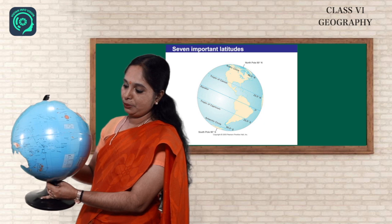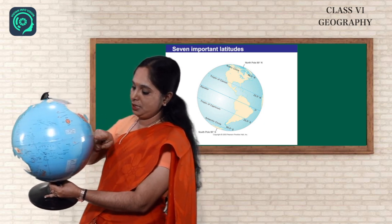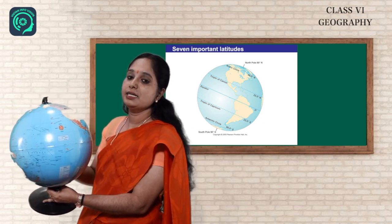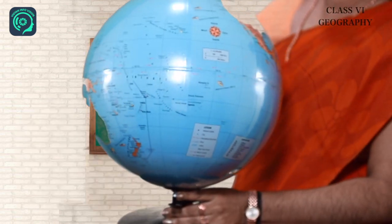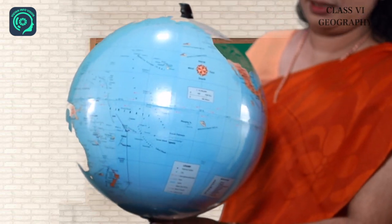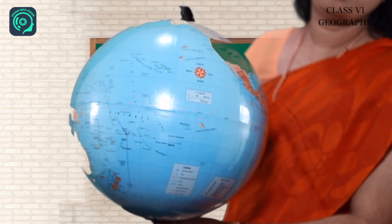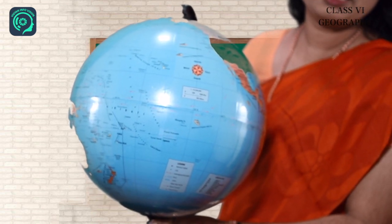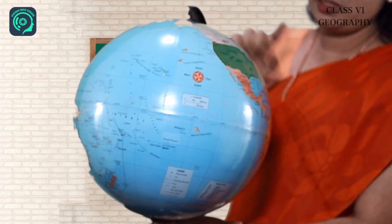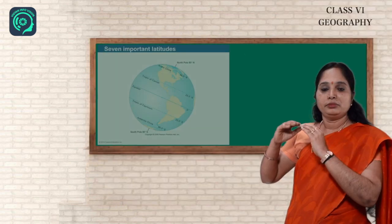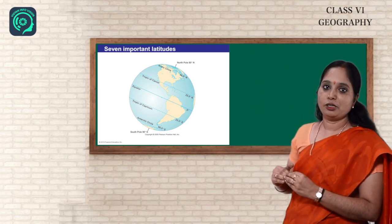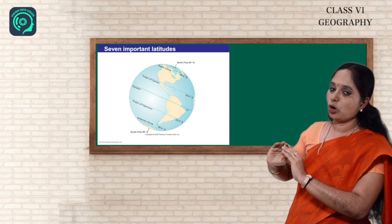The most important latitude that divides the earth into two is the equator. The equator divides the earth into the northern hemisphere and the southern hemisphere. Since the distance from the equator to either pole is one-fourth of a circle, it is 1/4 of 360, which equals 90. So there are 90 latitudes in the northern hemisphere and 90 in the southern hemisphere. The latitudes become smaller and smaller as we move towards the poles, but the distance between two latitudes is always the same.